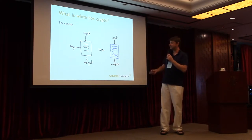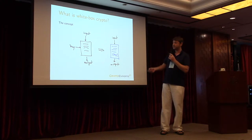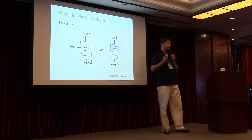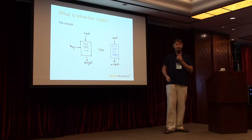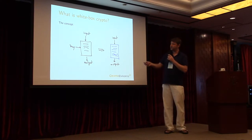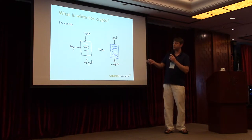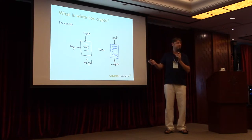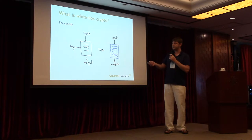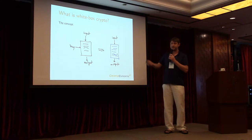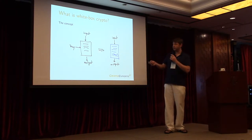Basically, when you take a cryptographic program — we don't care exactly about the functionality, it could be a block cipher, a signature scheme, or whatever — you have a program which is generic in the sense that it takes as input the algorithm's input, like the plaintext if you want to encrypt, the key as a separate input, and outputs the ciphertext. This program is very generic and this is exactly what you find in libraries.